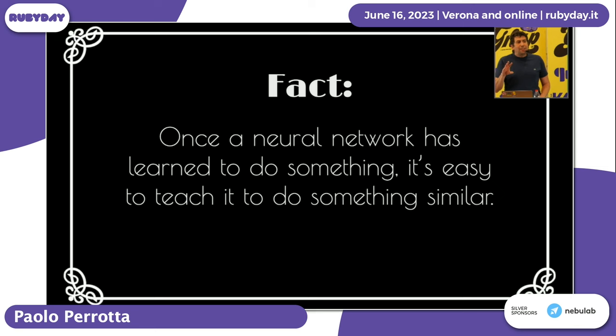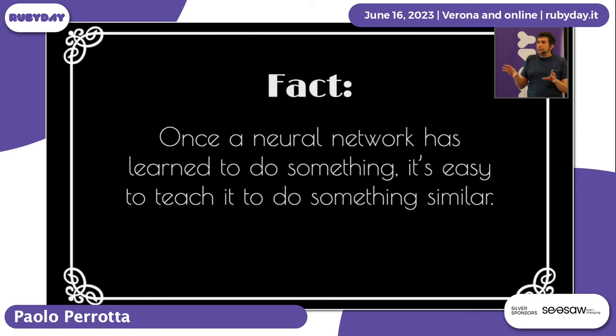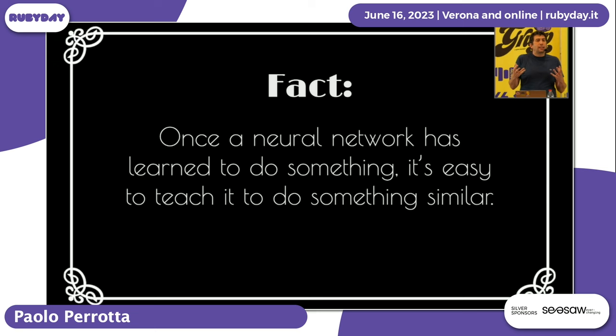That leads to another astounding fact: it doesn't take much to do that. What they call training, I call pre-training — it's almost all pre-training. Then you take a few people and ask them to write the answers, and the language model learns really quickly. This is a general property of neural networks: you can train them on something, and once they learn to do that, you can repurpose them very quickly.